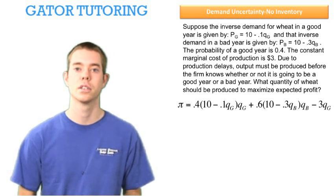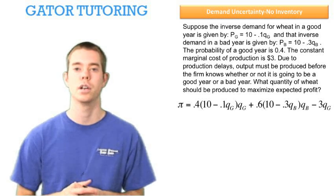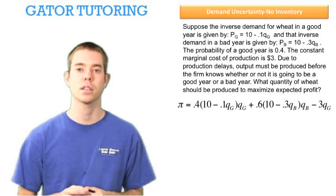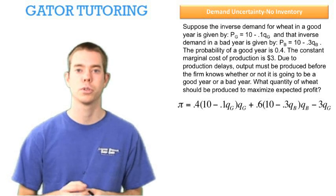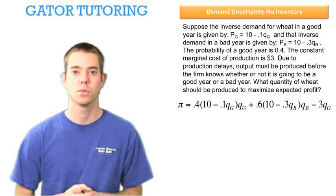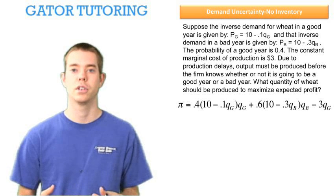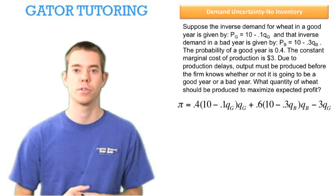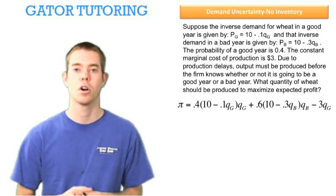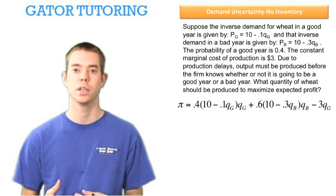Plus the 60% we think it's going to be a bad year, multiplied by the information for a bad year, which is the price in a bad year times the quantity in a bad year. Now we subtract the marginal cost only multiplied by the quantity we expect to sell in a good year. And this is because when preparing for our cost, we want to prepare for the worst case scenario. Well, it is the best case scenario for a firm to have a good year, but cost wise, the most cost would be incurred during a good year because you'd sell more units.